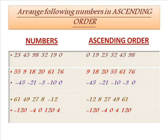Now it is exercise time. With more examples let us try to understand ascending order first. In the first column I have taken some numbers which have no order, and in the second column I have arranged these numbers in ascending order. First example: 23, 45, 98, 32, 19, 0. These numbers can be arranged in ascending order as 0, 19, 23, 32, 45, 98.